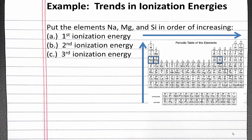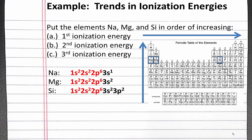We'll start by writing the electron configurations for sodium, magnesium, and silicon. The core electrons in these electron configurations are shown in red, and the valence electrons are shown in black. For the first ionization energy, we are removing valence electrons from sodium, magnesium, and silicon, so we can apply our periodic table trend. Our increasing order of first ionization energy is sodium, magnesium, and then silicon.